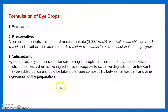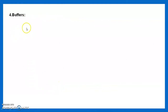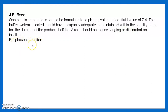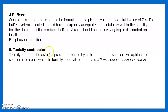Buffers: ophthalmic preparations should be formulated at a pH equivalent to tear fluid, which is 7.4. The buffer system selected should have adequate capacity to maintain pH within the stability range for the duration of the product's shelf life. It should not cause stinging or discomfort on installation. For ophthalmic use, phosphate buffers are preferred.